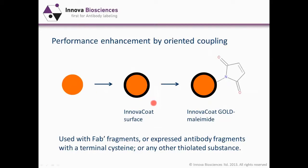This is the initial transformation to give the ANOVA coat protected particle. We can then take this a stage further and introduce maleamide groups into the surface coat. This can be used with FAB prime fragments or expressed antibody fragments, which often have a terminal cysteine introduced for conjugation purposes, or it can be used with any other thiolated substance.